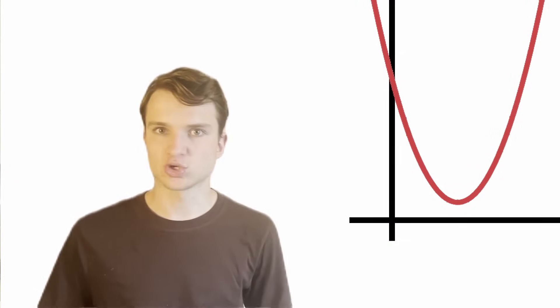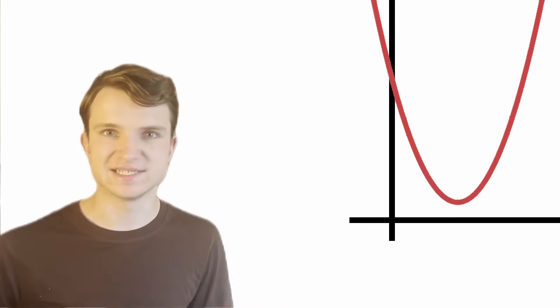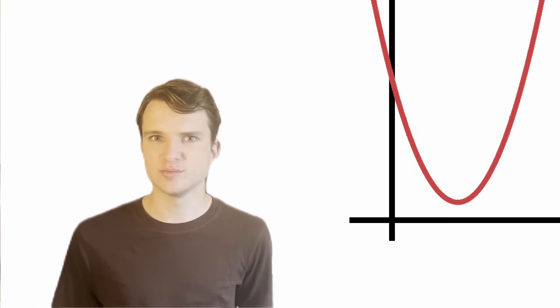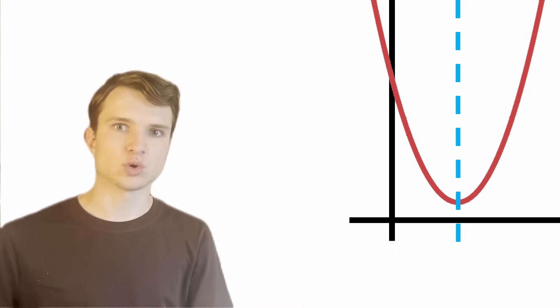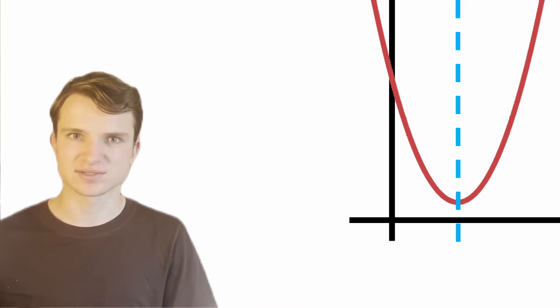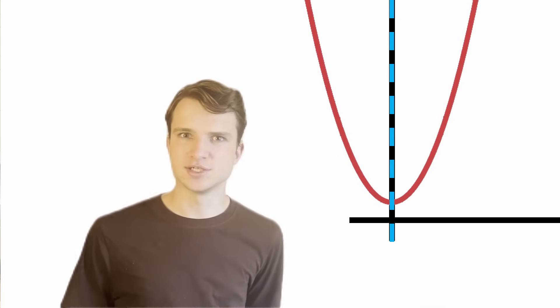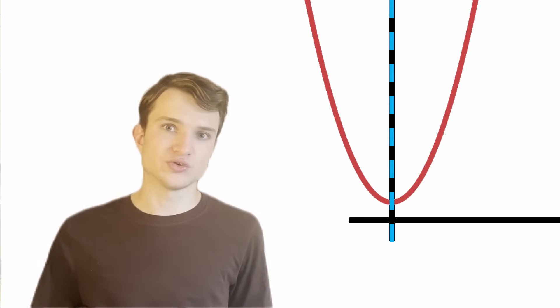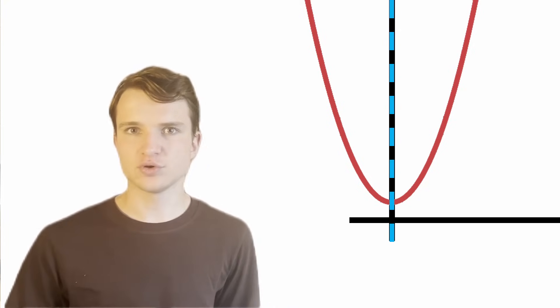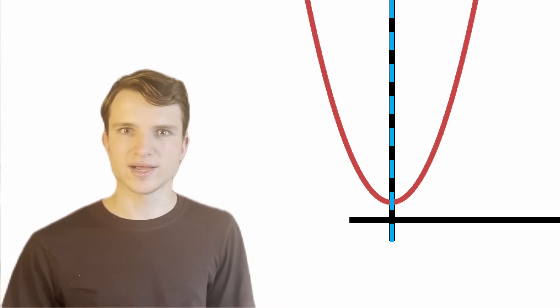You might have seen a way to get the quadratic formula by doing something called completing the square, but I'm going to show you a different way in this video, which is going to apply much more easily to cubics and quartics. So here's the graph of a general quadratic, and the key is to notice this blue line of symmetry right here. Every quadratic has a line of symmetry like this. If only I could shift the entire quadratic to the left so that this line of symmetry was on the y-axis, we would have something called an even function.